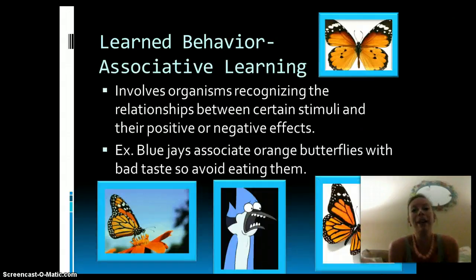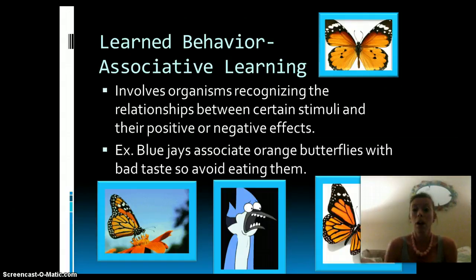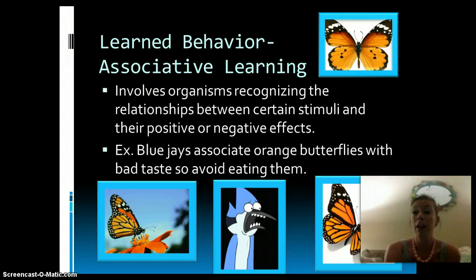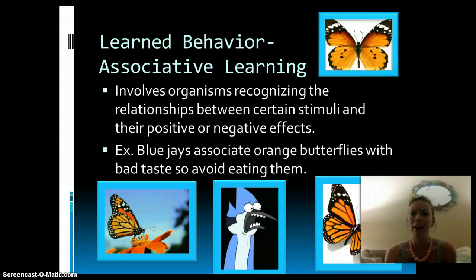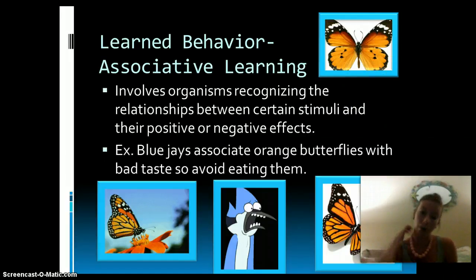Another learned behavior is associative learning, which involves recognizing relationships between certain stimuli and positive or negative effects. Here's an example with blue jays: blue jays ate these orange butterflies and learned that they tasted bad, so they avoided eating those butterflies. This ended up being protection for the butterflies and helped them survive. The blue jays would then find other organisms to eat — they're associating the bad taste with the orange color.